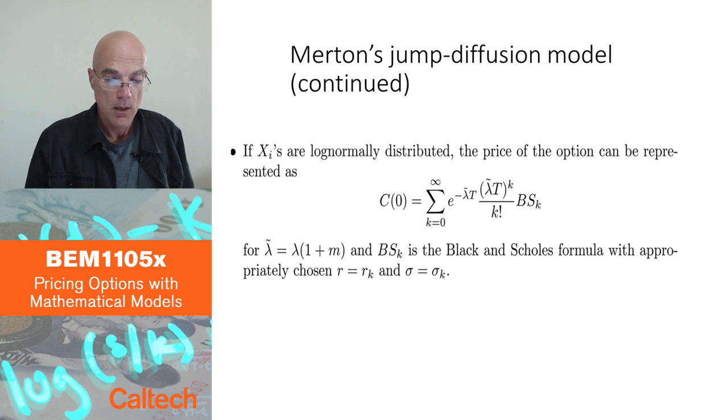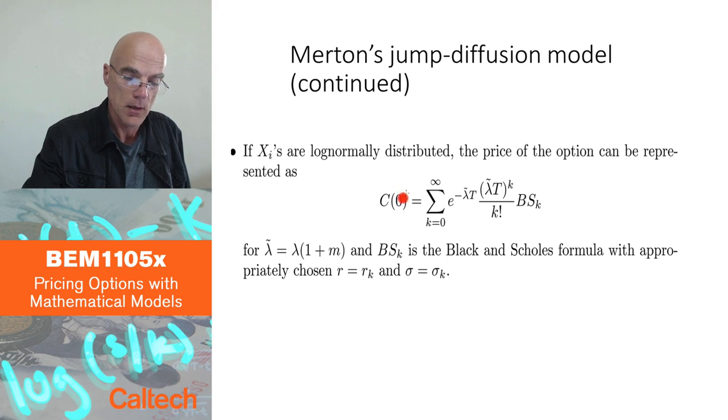So that's how, in general, it looks like the price of this, in this Merton's jump diffusion model is an infinite combination, infinite linear combination of Black-Scholes prices with some weights.